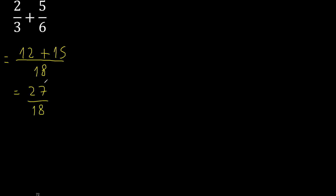27 can be simplified because it can be divided by the same number. Divided by 3: 27 divided by 3 is 9, 18 divided by 3 is 6.